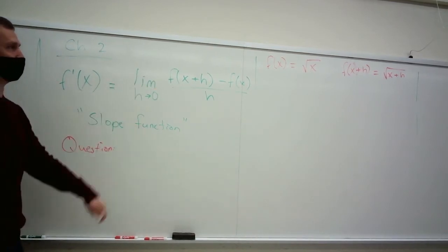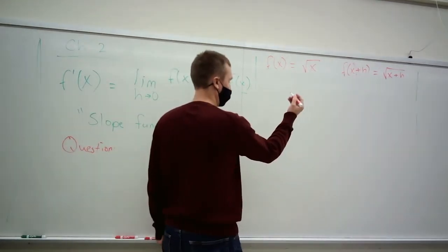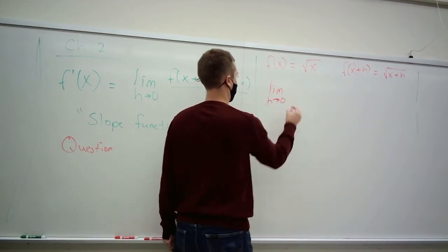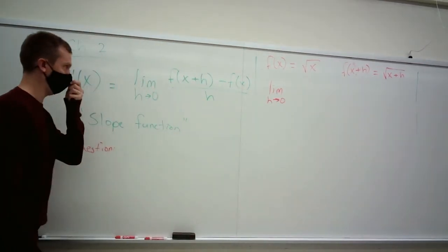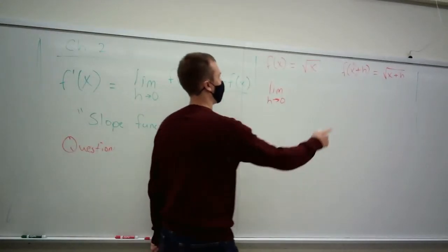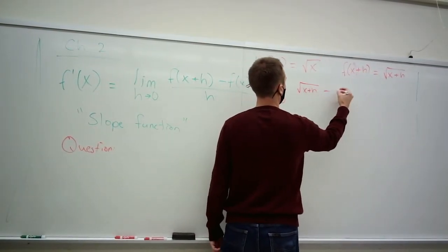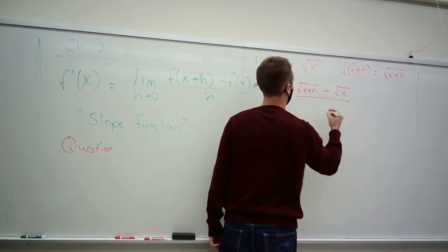Second, you write down this quotient. If you want to put in the limit from the beginning, you can. You don't need to, though. You can just sort of slap it on at the end after you've reduced. So, we're going to take this minus this, all divided by h.